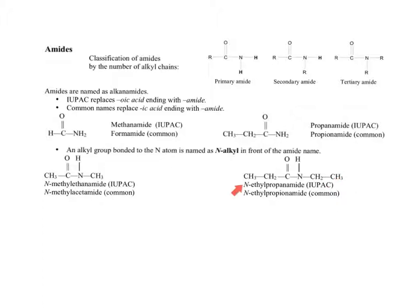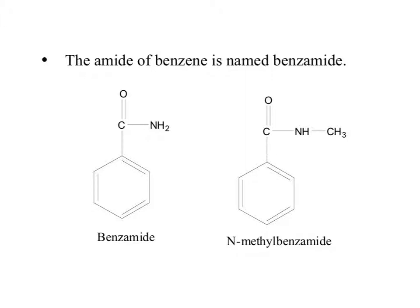In another example, the longest chain is three carbons, giving propylamide, with a two-carbon chain coming off the nitrogen making it N-ethylpropylamide. For benzene-based amides, we have benzamide, and with a methyl group coming off the nitrogen that becomes N-methylbenzamide. The IUPAC rules carry over to cyclic compounds as well.